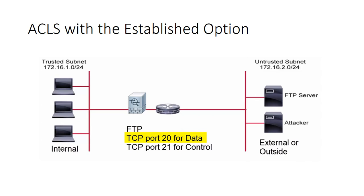The FTP server then responds with a packet that has both the SYN bit and the ACK bit set. The server will present its initial sequence number and acknowledge the client's initial sequence number. The client then completes the TCP three-way handshake with an ACK acknowledging the server's initial sequence number. In this case, the packets from the server associated with this connection have the ACK bit set and will be allowed by the established configuration in the ACL.